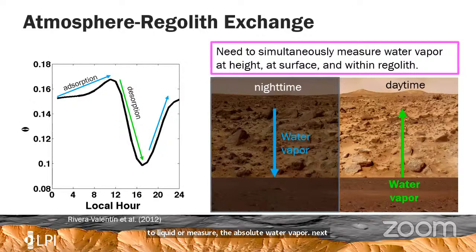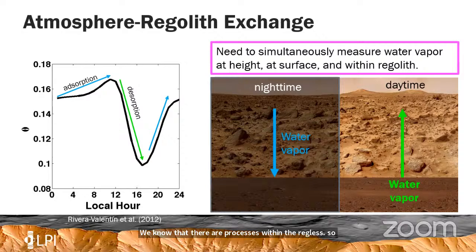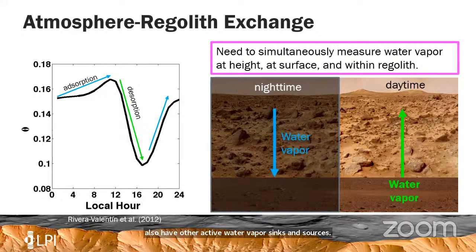We need to better know the surface exchange of water vapor. We know that there are processes within the regolith, such as physisorption, where it's expected that at nighttime you will adsorb water vapor onto regolith grains and then during the daytime be desorbing. We also have other active water vapor sinks and sources, so measuring the water vapor at different heights allows us to see the exchange from the regolith into the atmosphere and back.